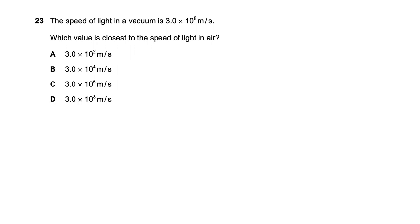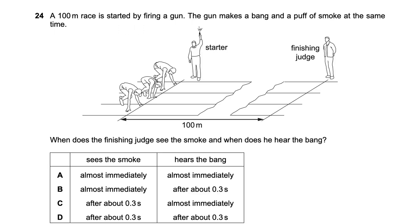Question twenty-three: the speed of light in a vacuum is 3×10⁸ m/s. The speed of light in air is almost the same as in vacuum, so the closest value is 3×10⁸ meters per second.